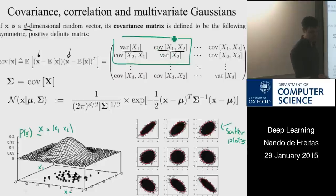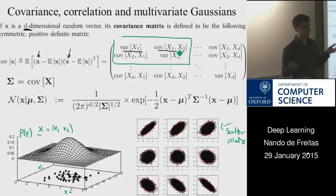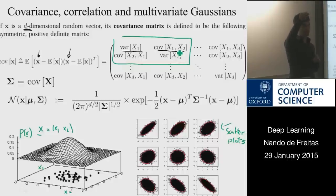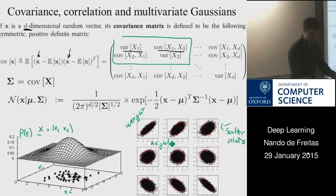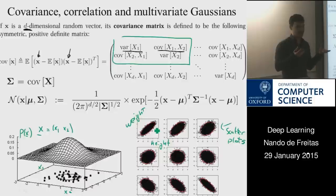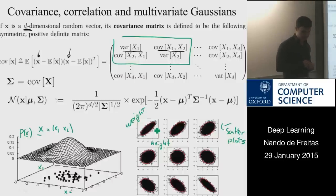If points are in 2D with a 2x2 covariance and 2D mean, you need five parameters to describe your data: mu1, mu2, the two variances (diagonal entries), and one off-diagonal covariance. Knowing those five numbers, you can throw away all the individual points and fully describe how they are distributed. This is the multivariate Gaussian distribution.